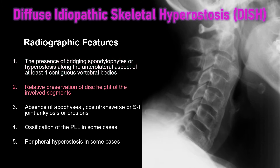Another feature of DISH is relative preservation of intervertebral disc height of the involved segments. In degenerative disc disease, the intervertebral disc height is usually significantly decreased, but with DISH you'll see relative preservation of these disc heights. This is a key feature to look for.